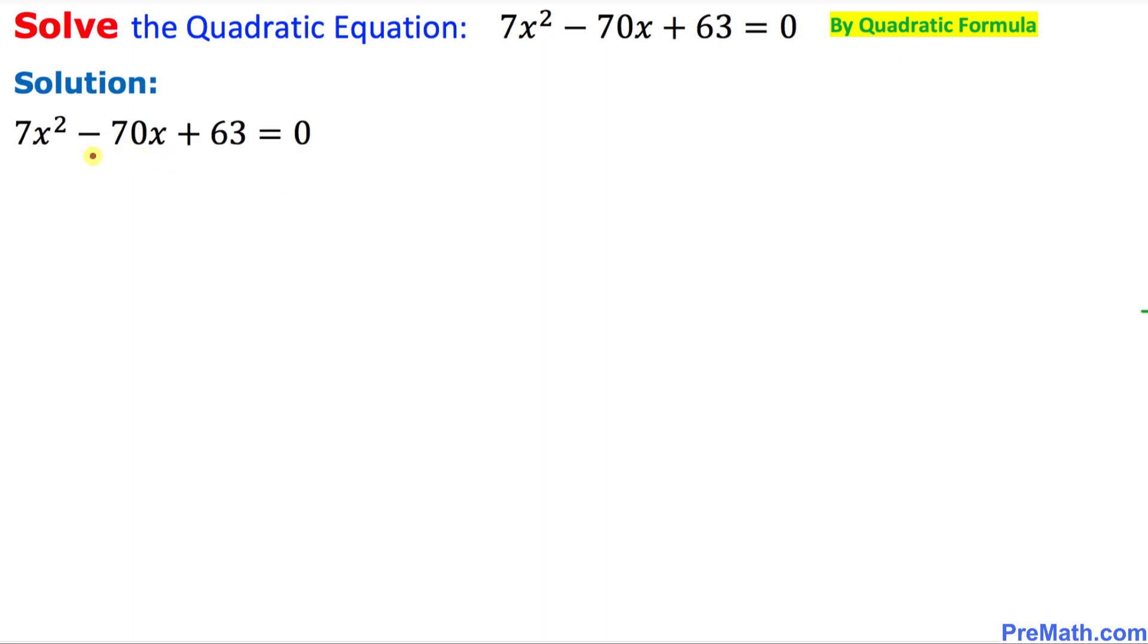Let's get started with our given solution. Here we can see this quadratic equation. As you can see, each and every term is divisible by 7. So we are going to divide each and every term by 7 across the board.